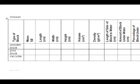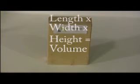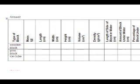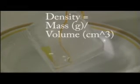Measure the length, width, and height of each object to a tenth of a centimeter. Record the values in your data table. Find the volume of each object by multiplying the length by the width by the height. Round the volume to the nearest whole number and record it in the data table. Calculate the density of each object by dividing the mass of the object by its volume.